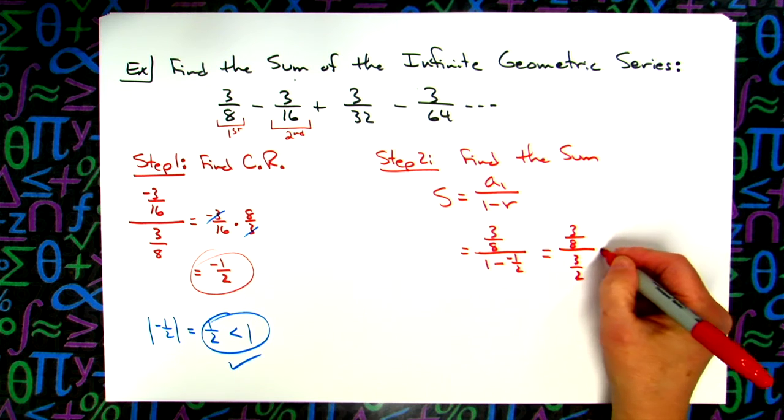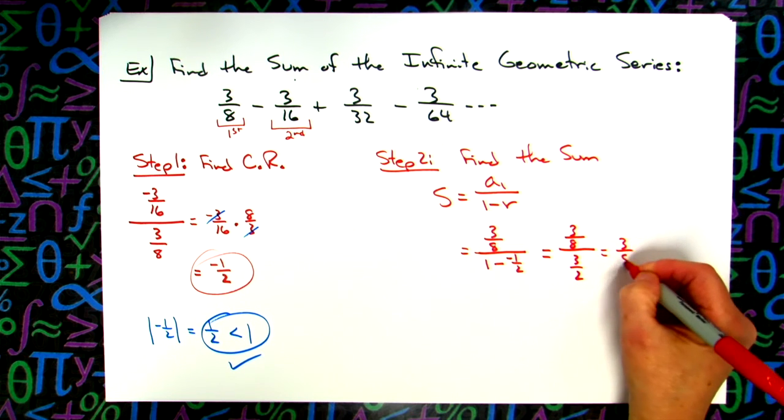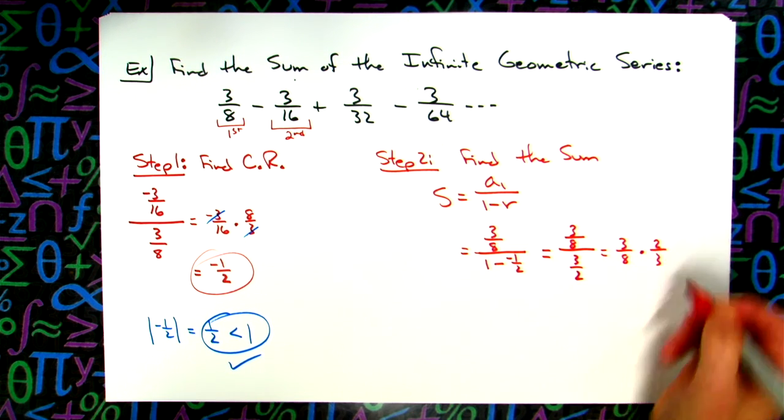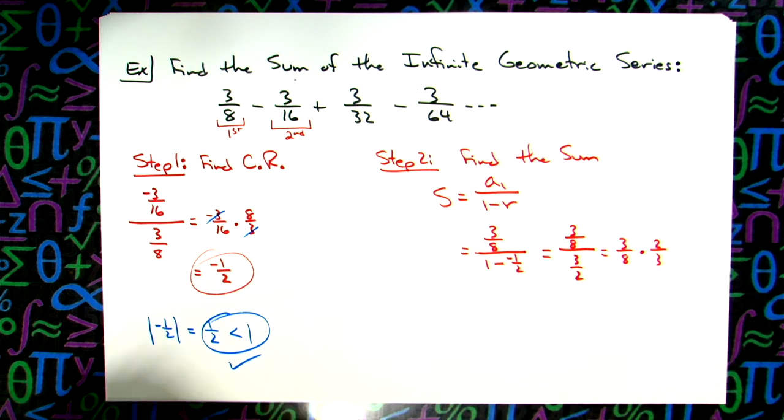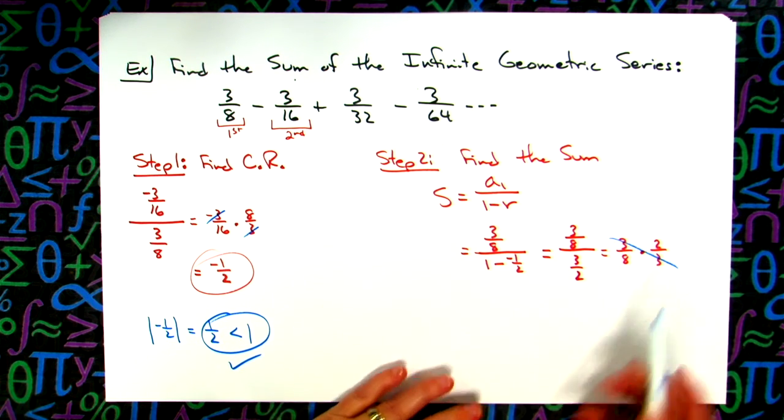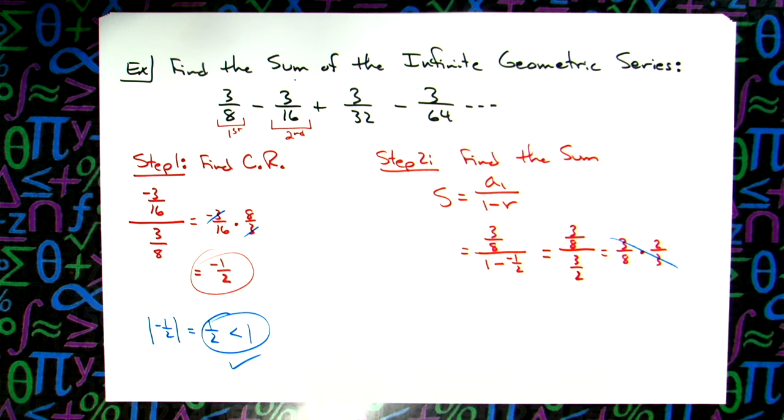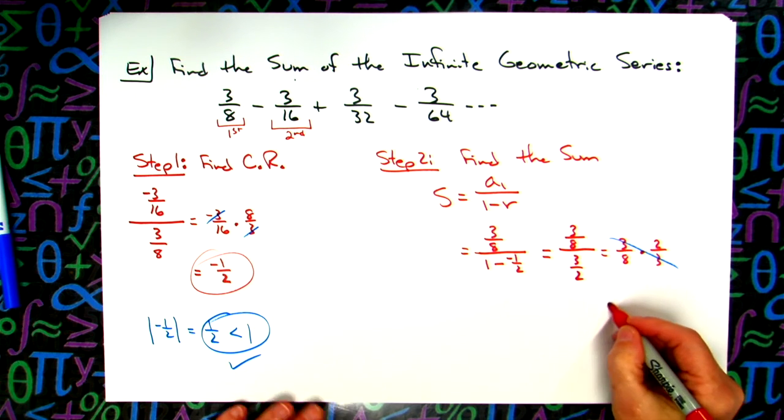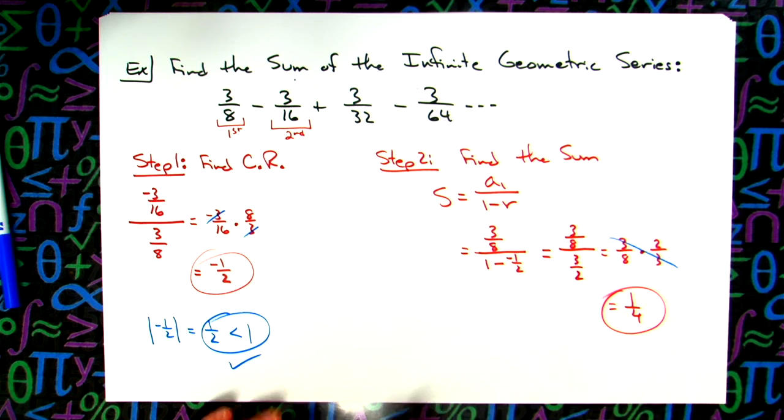Keep it, switch it, flip it, works pretty nice. So 3/8ths times 2/3rds. That's going to let those 3's cross off. So 2/8ths, reduce to lowest terms, 1/4. So my sum is going to be 1/4.